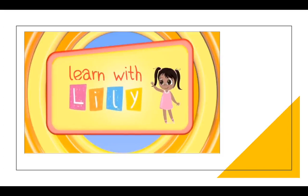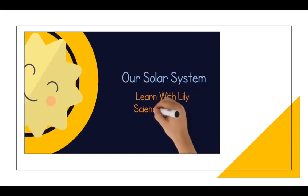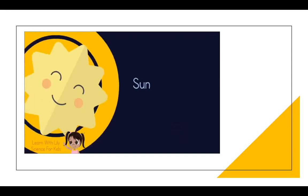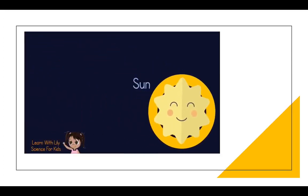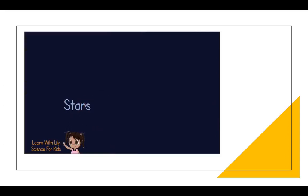Learn with Lily! Hi everyone! Welcome to Learn with Lily! And today, we're going to learn about our solar system. Science for kids! In our solar system, we have the sun. It's big and yellow. We also have the moon. It comes out at night. And then we also have stars.